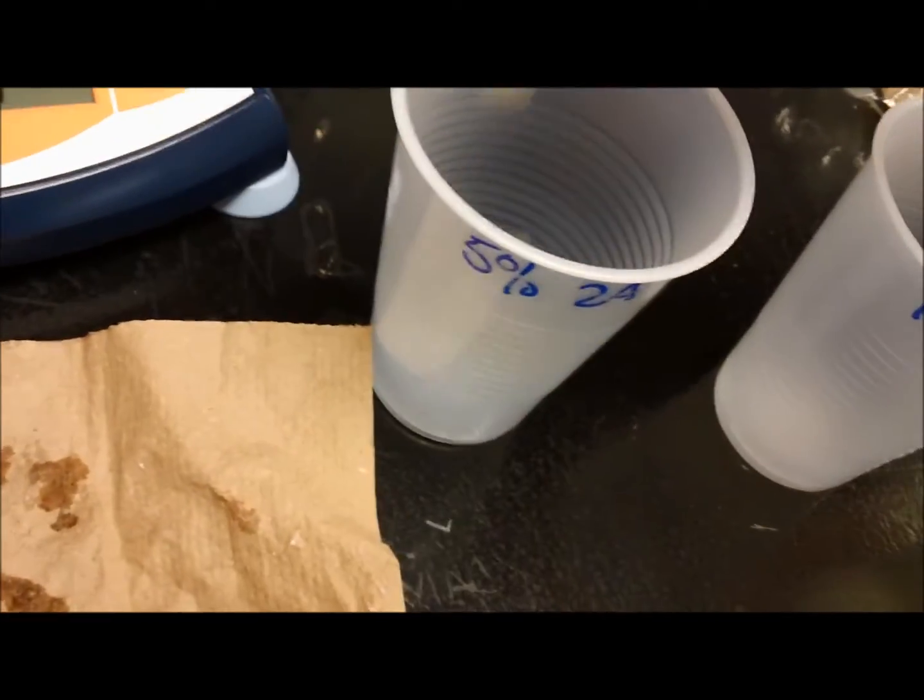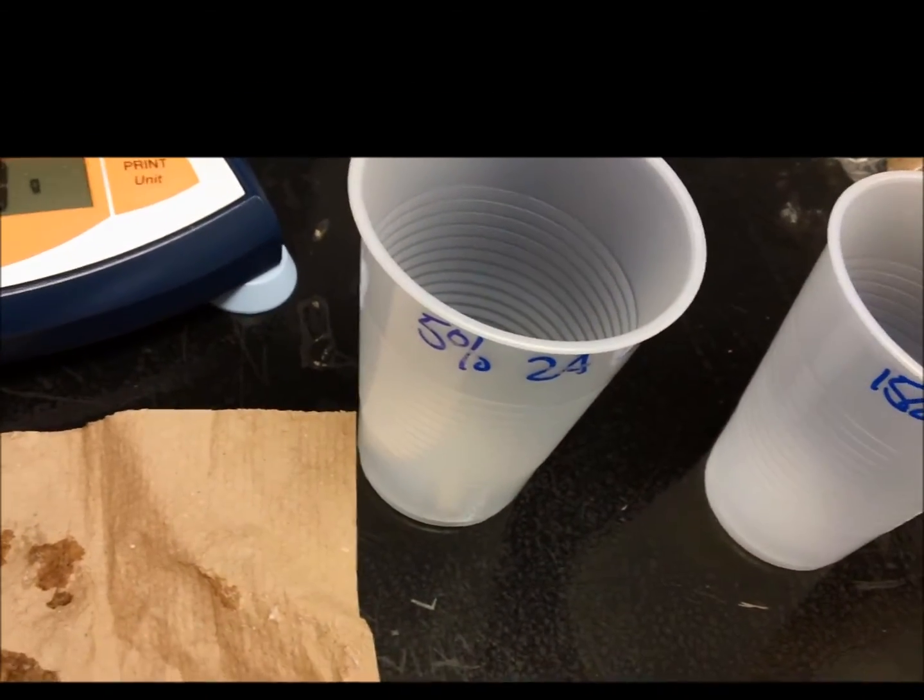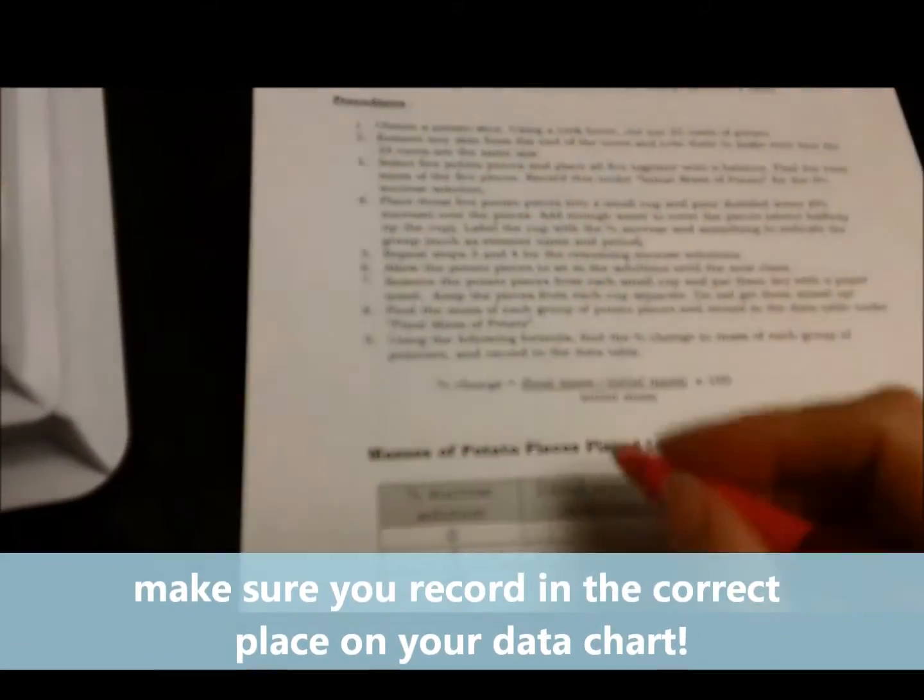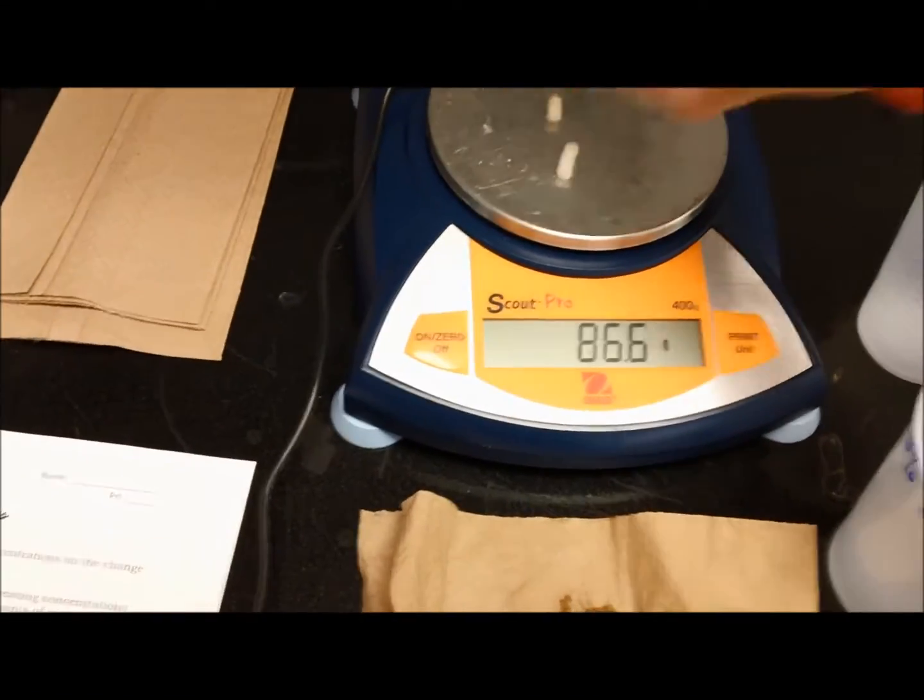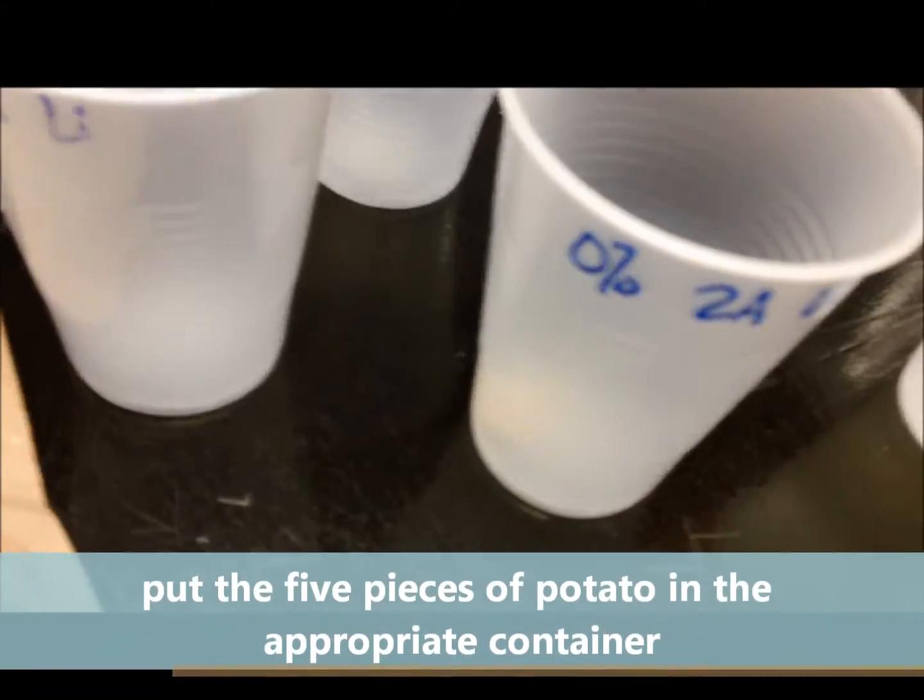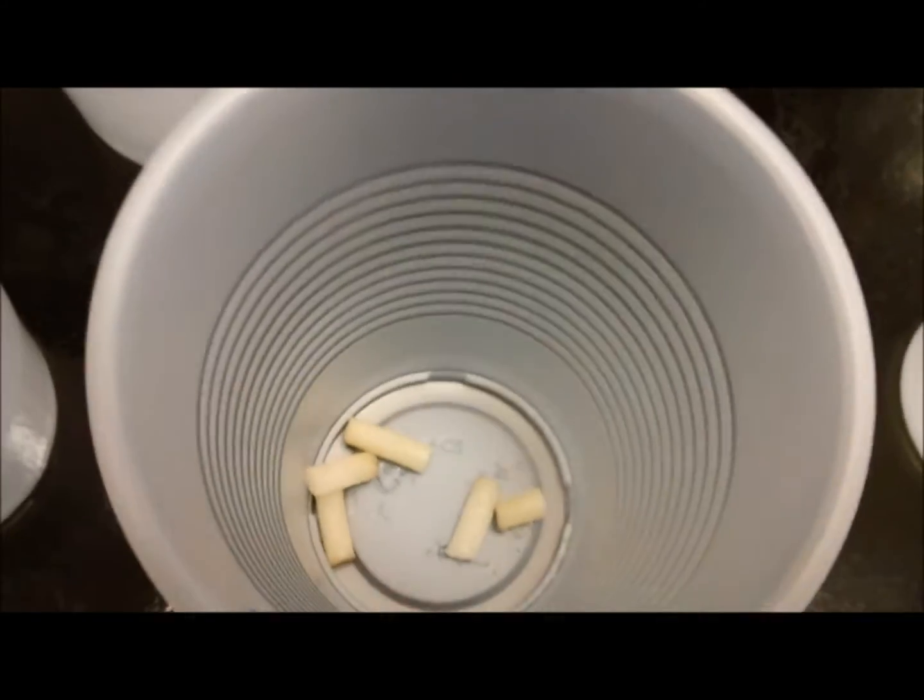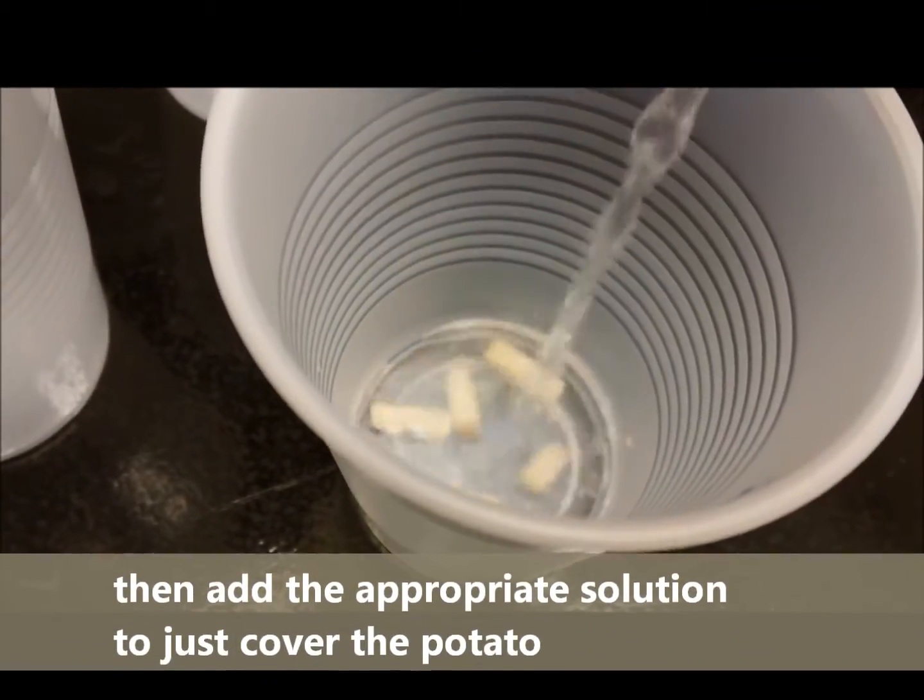Then you are done for this part of the lab. Let it reach equilibrium, then record your particular mass. Put the five pieces of potato in the appropriate labeled container, and then add the appropriate solution and pour until the potatoes are just barely covered.